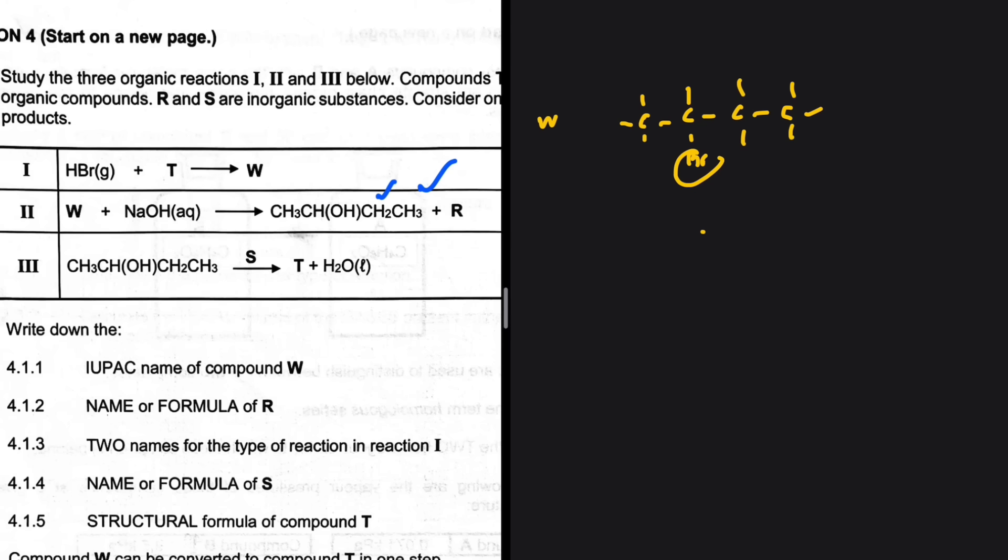That makes sense for W because we're gonna replace Br with the OH. Let's carry on and deduce more things. Reaction 3, we have the product of reaction 2, some inorganic reactant S, and then we have H2O. We've removed H2O in reaction 3, so it means that T should be an alkene, and reaction 3 should be dehydration. This is T, this has to be T, but T is the same thing that we had in reaction 1.